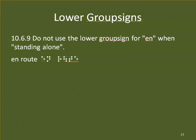Do not use the lower group sign for EN when it's standing alone. If EN means EN standing alone, we're not going to use it — otherwise it would be read as the whole word sign 'enough,' not the group sign. So we have to spell it out. For example, 'en route' — we spell out E-N.